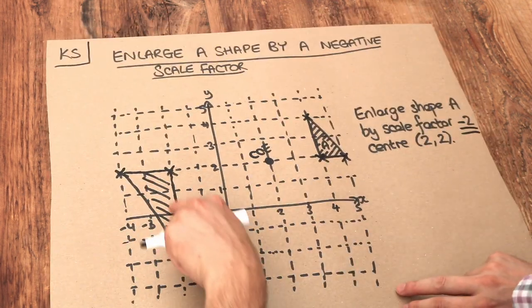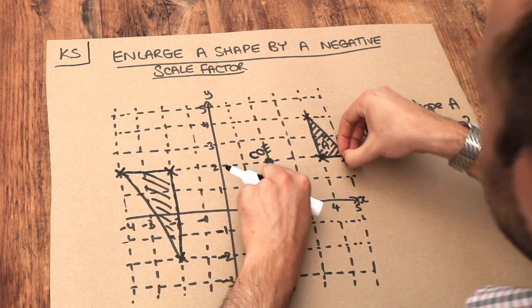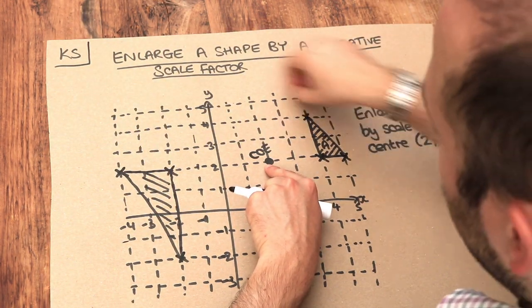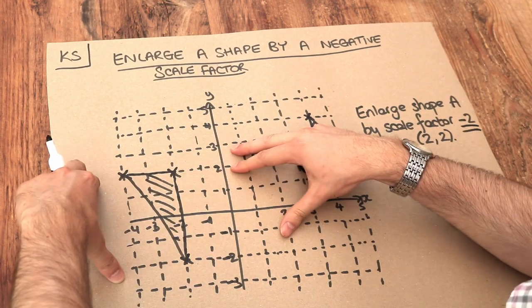And we've got two things that effectively happen to this shape. Firstly, it's been rotated around the centre of enlargement. So we get a kind of rotation, but it's also scaled up as well.